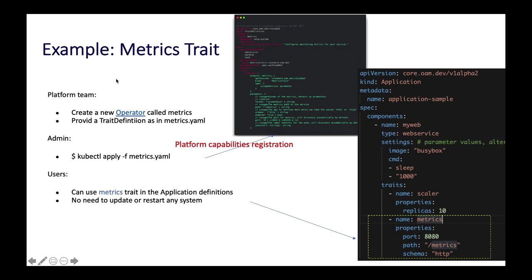Now let's walk through an example of how CUE and Terraform work in real world organizations. First, the platform team creates an operator called metrics. They use metrics as a trait, so they need to write a trait definition as a YAML file. The platform admin can then execute a command to apply these definition files along with the operator resources onto the cluster. In this way, the capability will be registered on Kubernetes automatically. The developer users can then use metrics as a trait in their application objects and roll out to production. Note there's no need to restart or upgrade the platform itself — that's how Kubernetes handles the registration automatically, solving critical team collaboration problems.